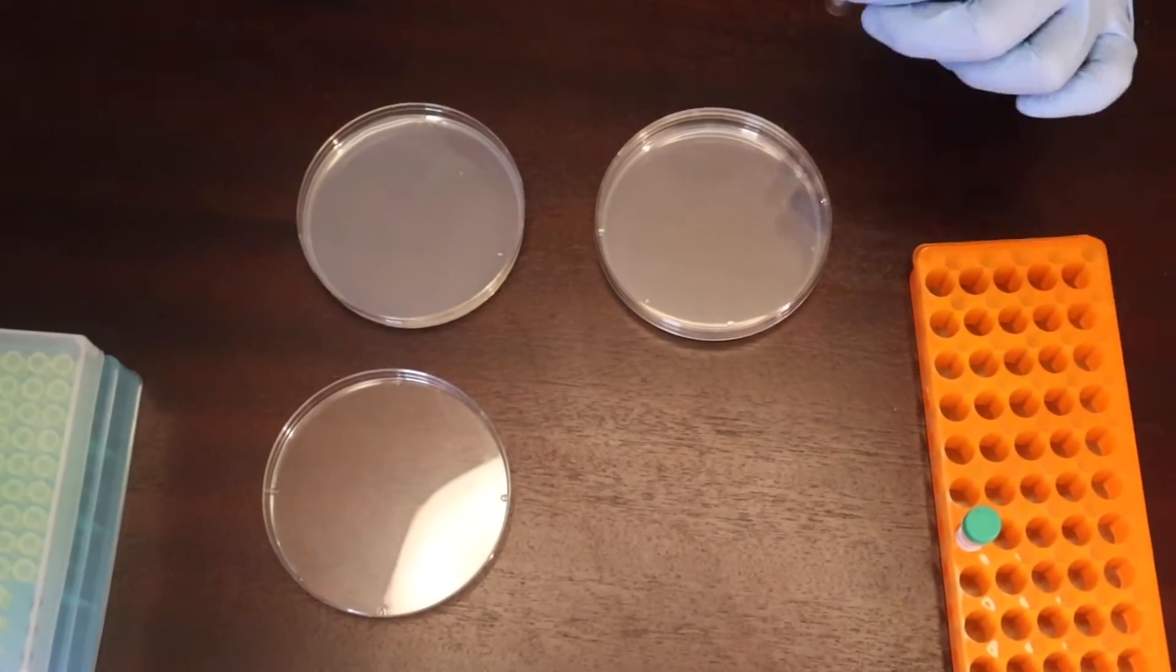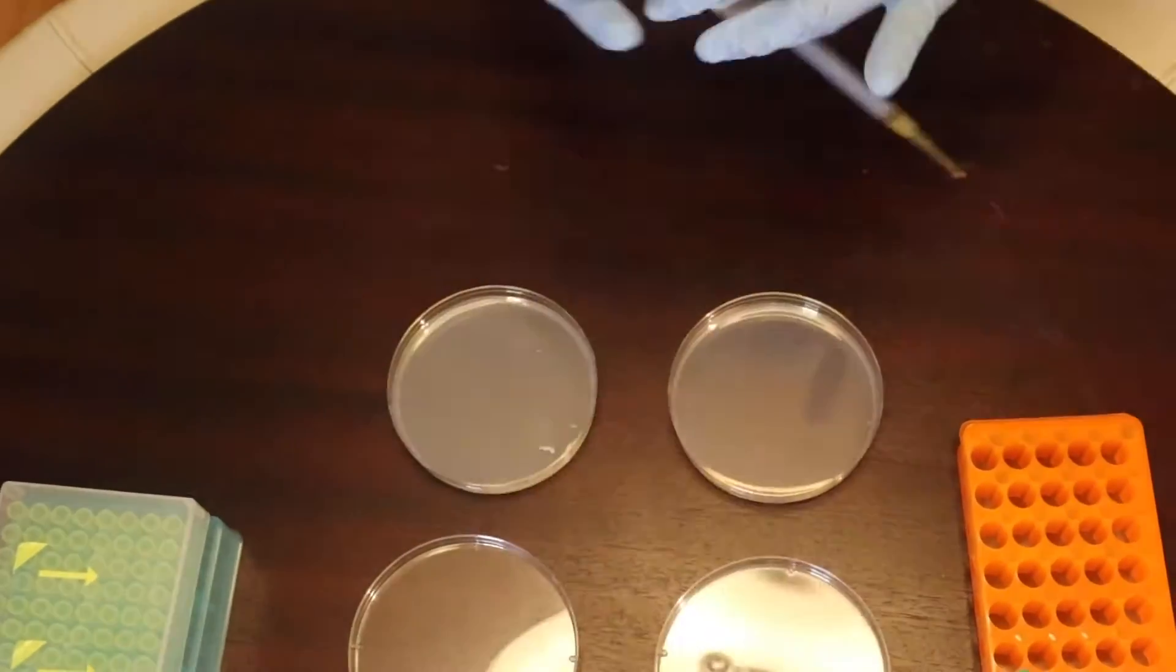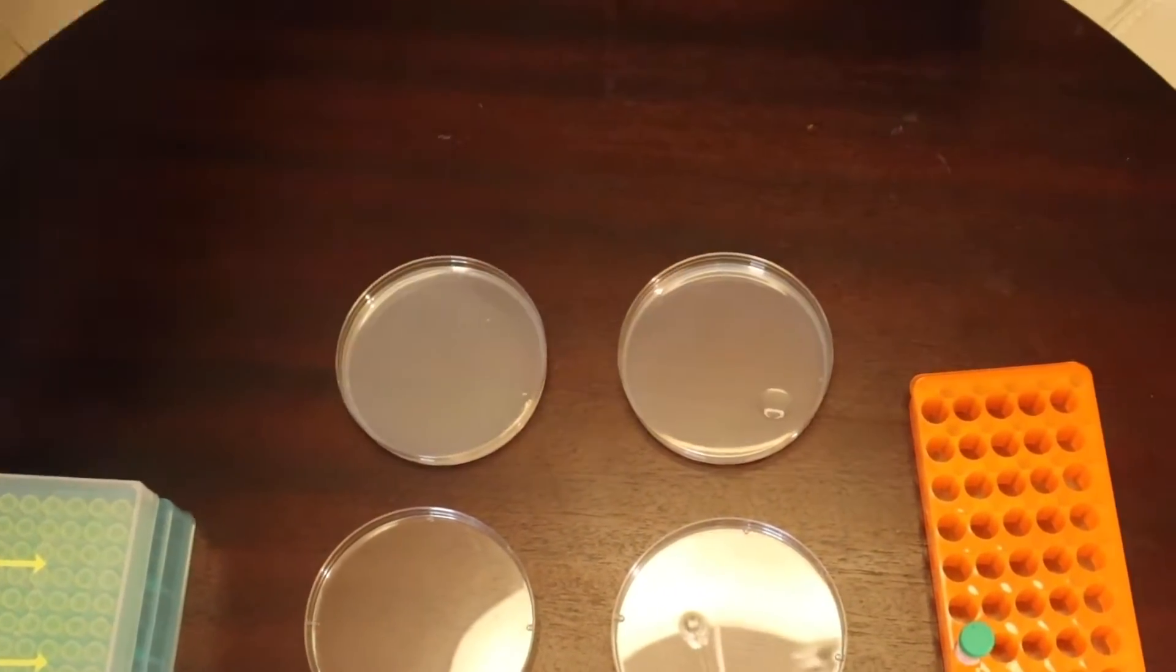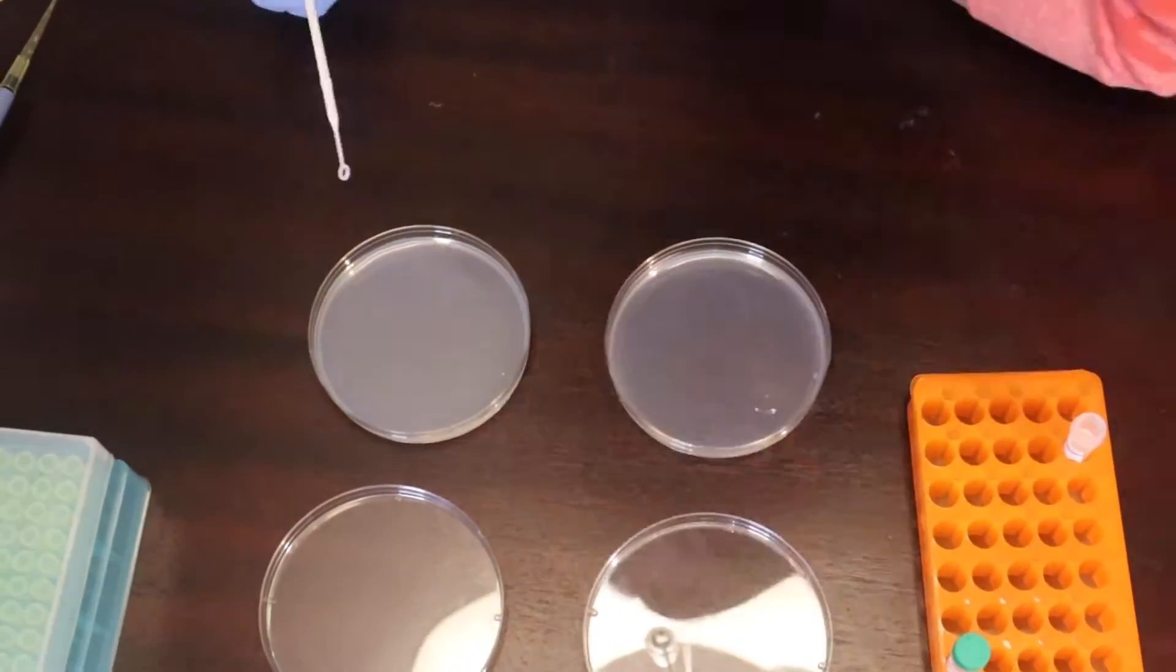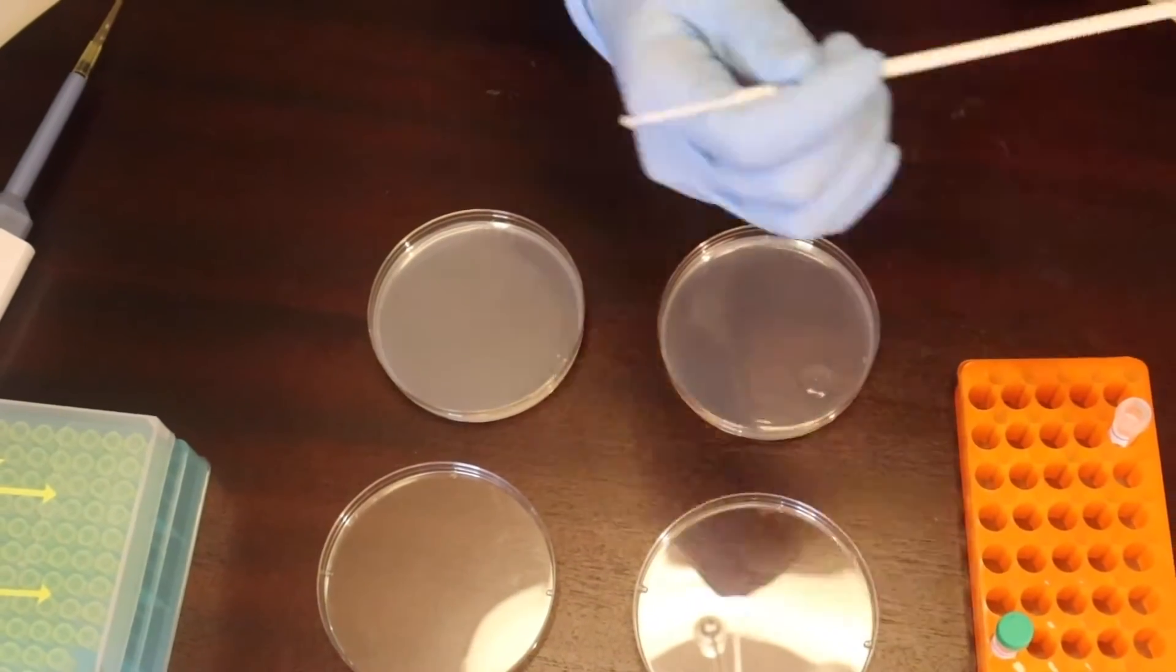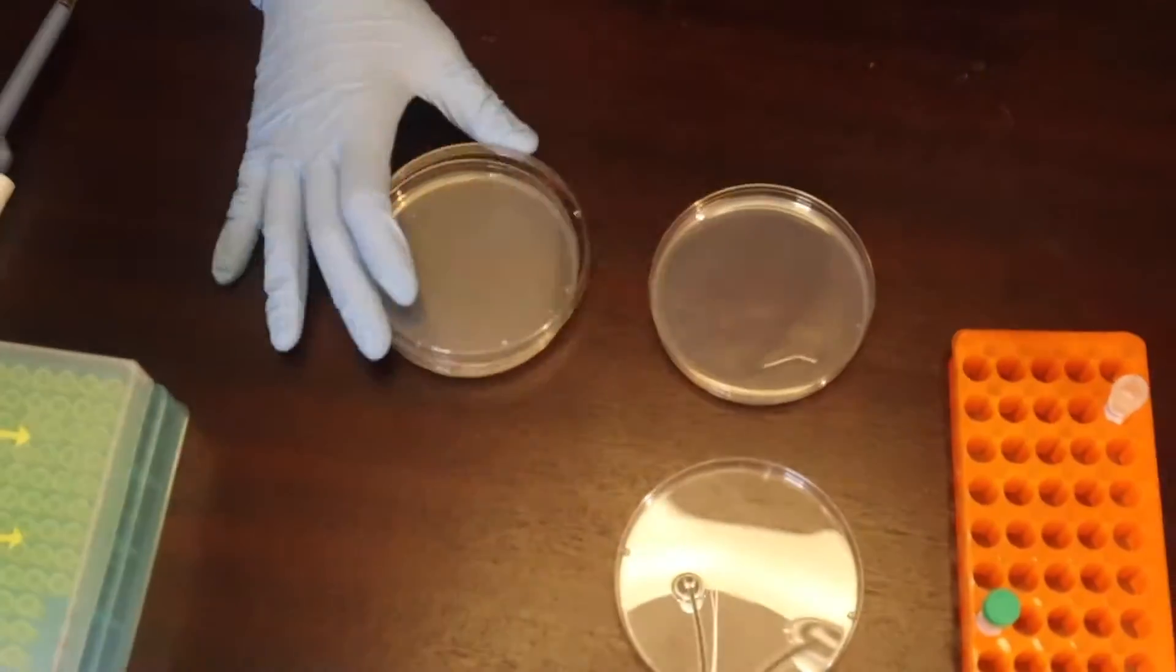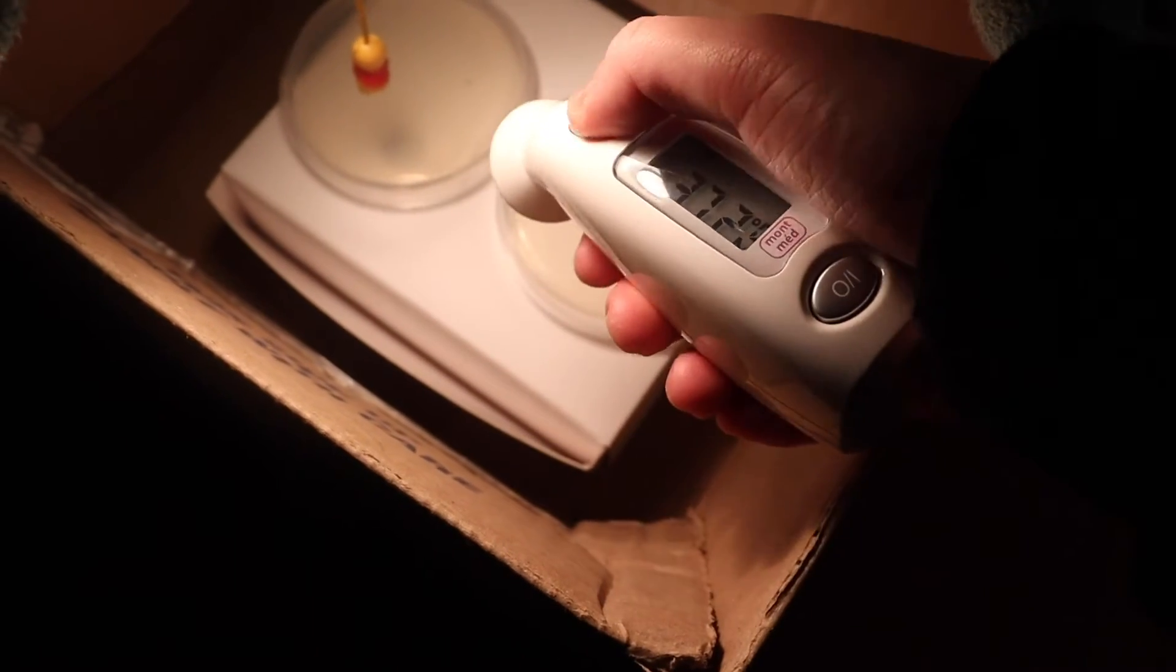Now I'm pipetting our dissolved E. coli onto our LB agar media and using the large end of an inoculation loop to streak out the bacteria. Bacteria grows best at 37 degrees Celsius, so I put the plates in this makeshift incubator, which in fact did reach 37 degrees overnight.